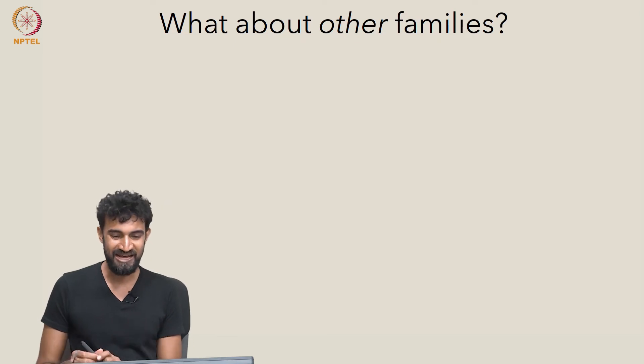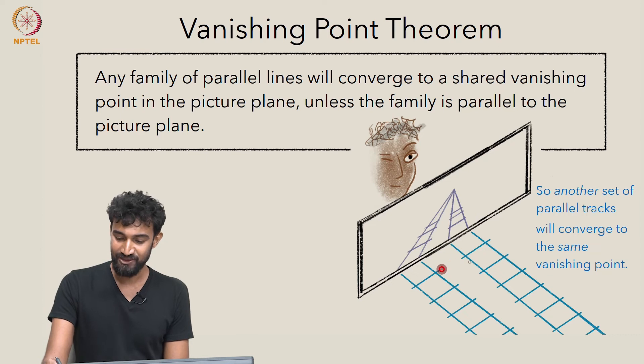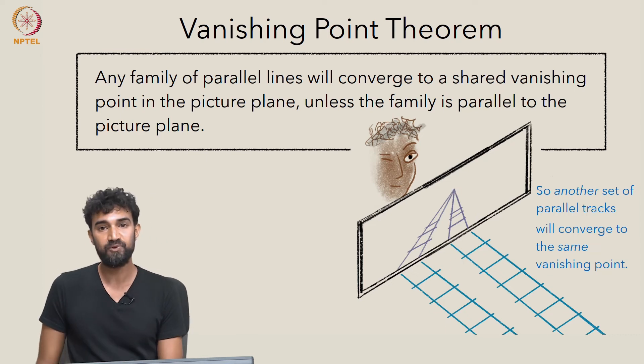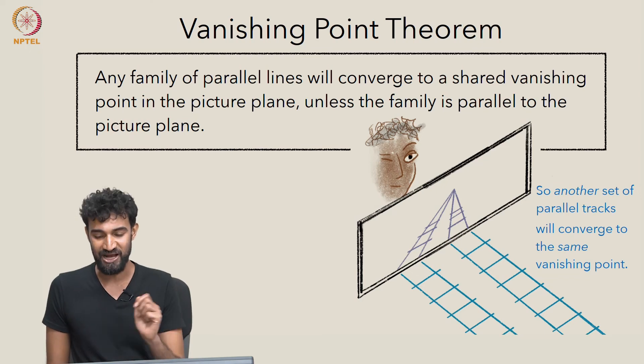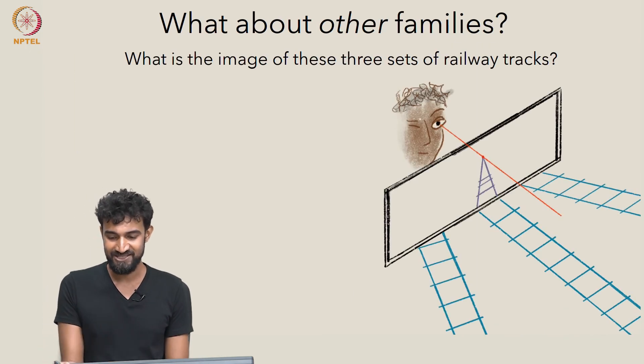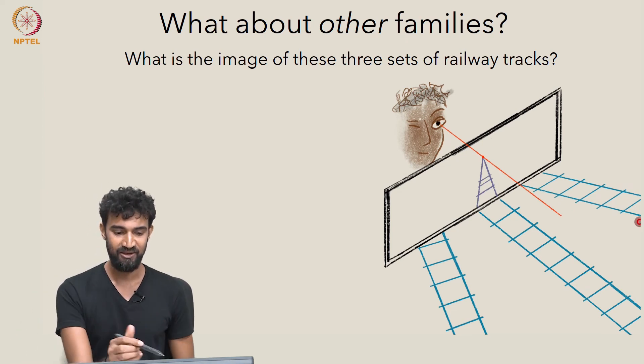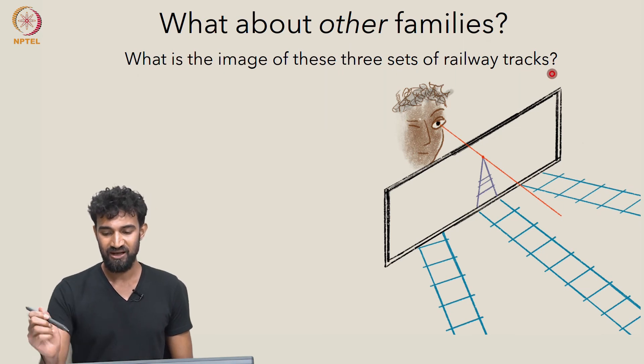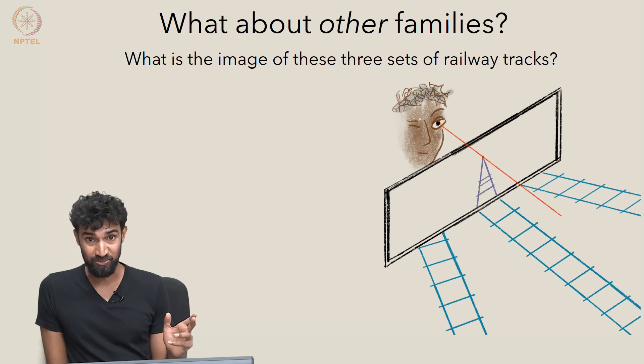But here's a natural question. What about other families? Other lines that are in this family will all share this vanishing point. But what about a different family of parallel lines in space, which is not parallel to the side rails of these railway tracks? For instance, let's say that we have two other sets of railway tracks which are not parallel to our original railway tracks. What is the image of these three sets of railway tracks going to look like in the picture plane?